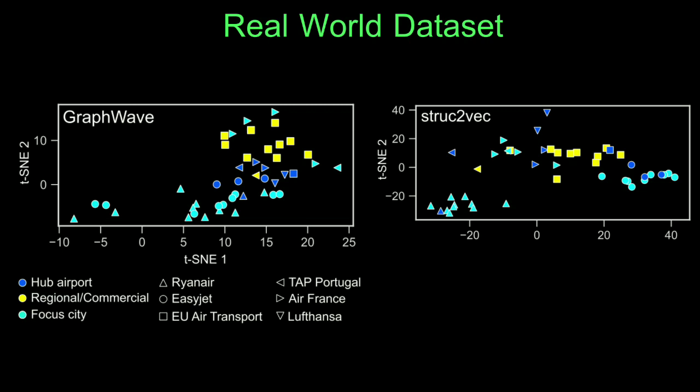As you can see on the left, GraphWave clusters airports. However, all state-of-the-art Structure2Vec cannot generalize embeddings across different airline networks and thus cannot successfully identify which airports are structurally equivalent across airlines.